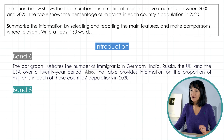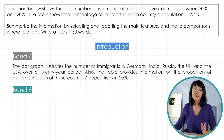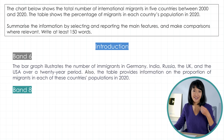Let's read his introduction. 'The bar graph illustrates the number of migrants in Germany, India, Russia, the UK and the USA over a 20-year period. Also, the table provides information on the proportion of migrants in each of these countries' populations in 2020.' Paragraph 1 starts by briefly describing the data presented in the bar chart and the table. These sentences paraphrase the task.